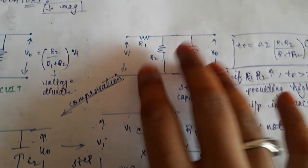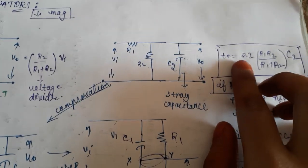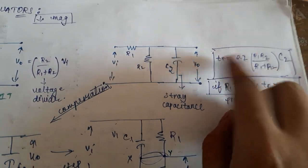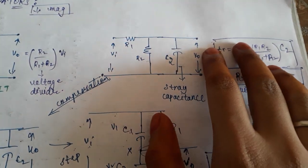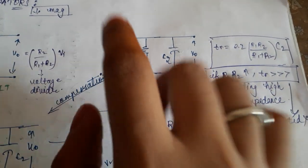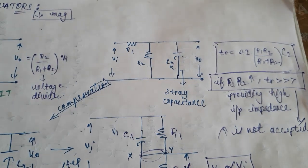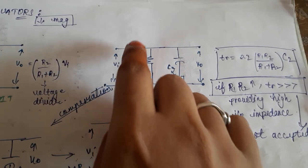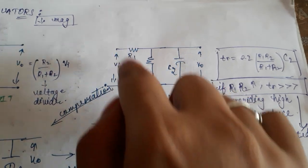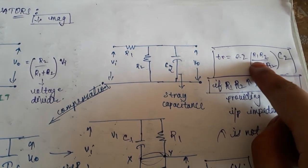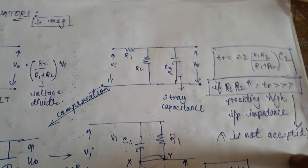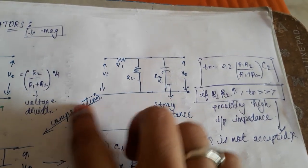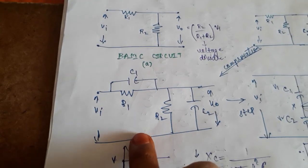Let us consider the rise time: Tr = 2.2 × (R1·R2 / (R1 + R2)) × C2. R1 and R2 values are taken very large in order to give high input impedance and prevent loading down of the input signal. But when these two values are large, the rise time is also large, which is not acceptable. For that reason, we go for compensation.